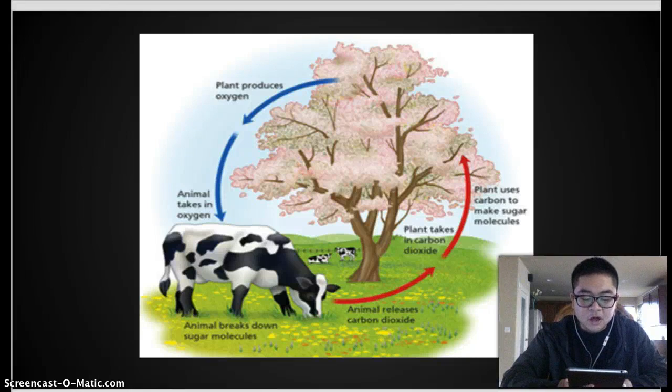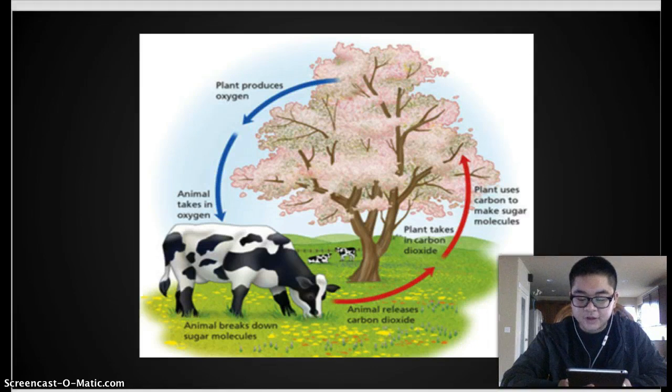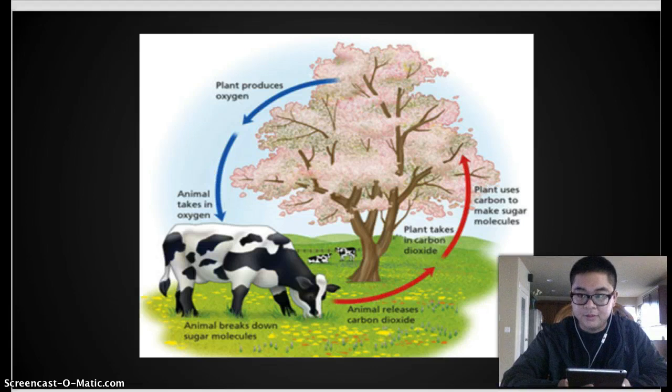The oxygen cycle, also known as a biochemical cycle, is a movement of oxygen within its three main reservoirs: the atmosphere, the total content of biological matter within the biosphere, and the lithosphere.